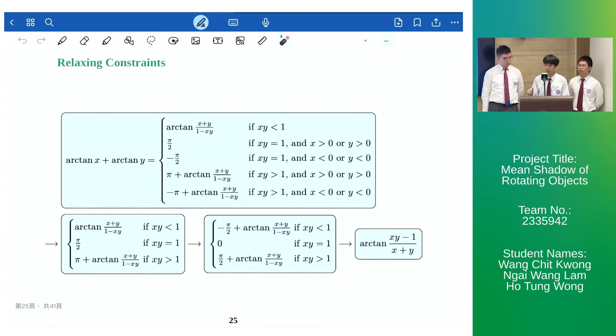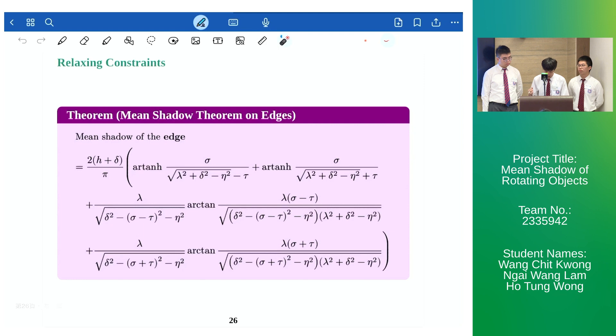Therefore further simplification is needed. Making use of the arc tangent addition formula results in five cases which by ruling out some impossible cases we can reduce to three cases and finally to a single unified case. Hence we obtain the mean shadow of an edge.